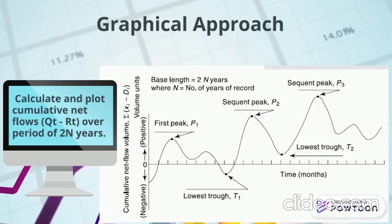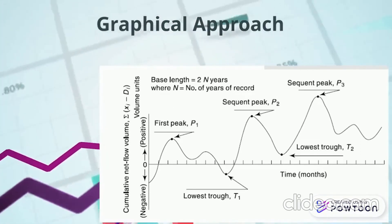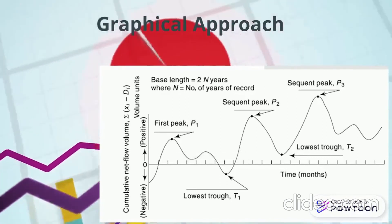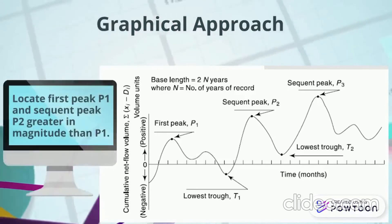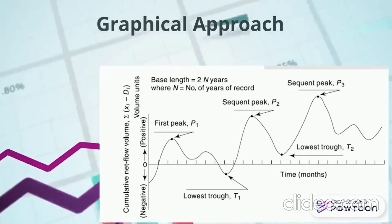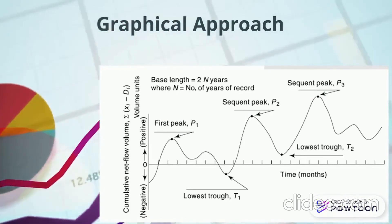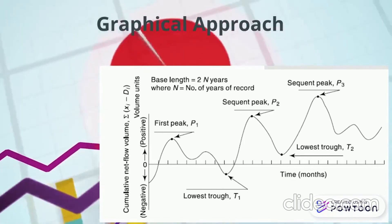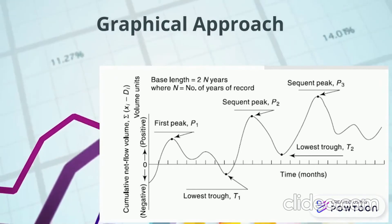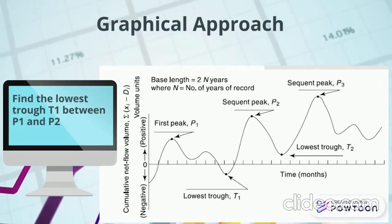Now, you will observe one thing after plotting is that there will be sequence of peaks and troughs that are occurring in the data. Peaks indicate that the value of cumulative net flow is the greatest in that given period, in that given small interval. So, now you will locate the first peak P1 that is occurring, and then the next sequent peak P2 which is of magnitude greater than P1, and then P3 which is of magnitude greater than P2 and P1, and so on. After you have identified the peaks that are the maximum possible values of cumulative net flow in a given small interval, your next job is to identify the minimum possible value of cumulative net flow, which are called troughs.